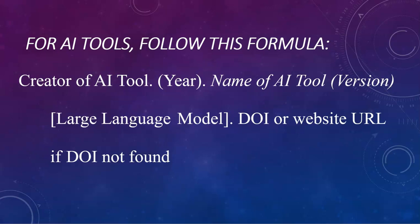When we get to the references page, we'll use this formula to build a citation when we use AI. We start with the name of the creator of the AI tool, followed by the year the tool was made, then the name of the AI tool and its version in italics, followed by in brackets what type of tool it is — for example, large language model, not an image-generating tool. Then we end with the website address.